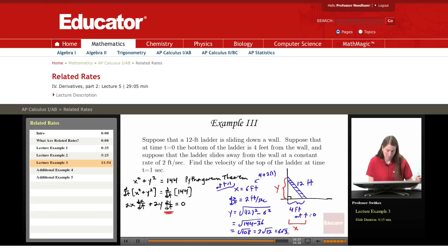So now we have values for x and y and dx dt. And now we go back and substitute those in. So we have 2 times an x value of 6 times a dx dt value of 2 plus 2 times a y value of 6 radical 3 times dy dt, where dy dt is what we're looking for. All of this equals 0.